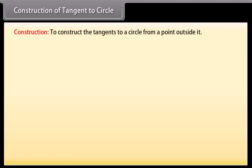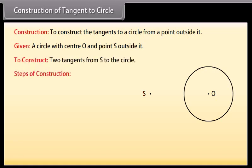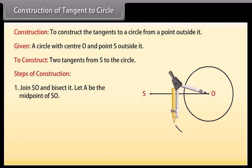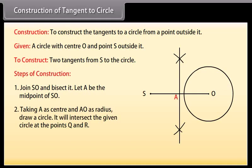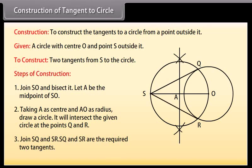Construction: To construct the tangents to a circle from a point outside it. We are given a circle with center O and a point S outside it. We have to construct the two tangents from S to the circle. Steps of construction: Join SO and bisect it. Let A be the midpoint of SO. Taking A as center and AO as radius, draw a circle. It will intersect the given circle at the points Q and R. Join SQ and SR. SQ and SR are the required two tangents.